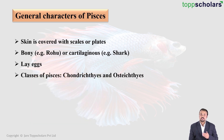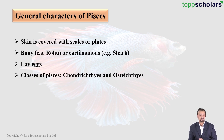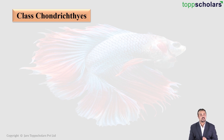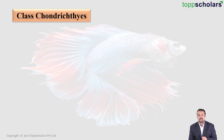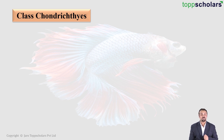There are two classes under fish: class Chondrichthyes and class Osteichthyes. Let us first begin with class Chondrichthyes. Breaking down the word: 'chondron' means cartilage and 'ichthys' means fish. So basically this is another word for cartilaginous fish.